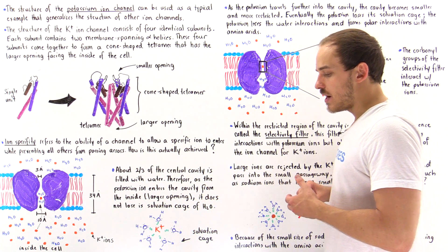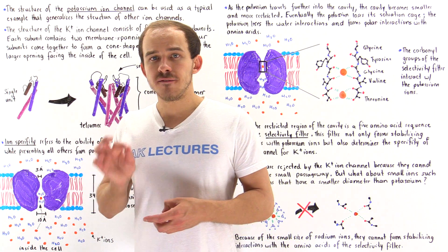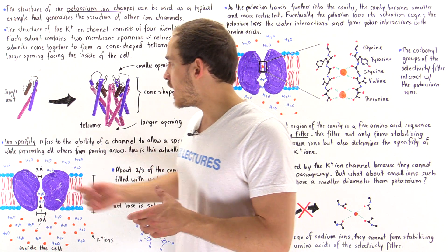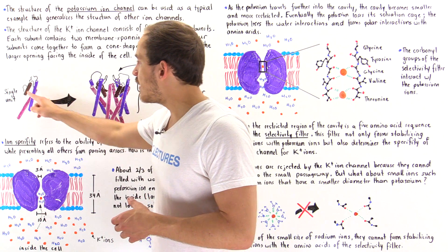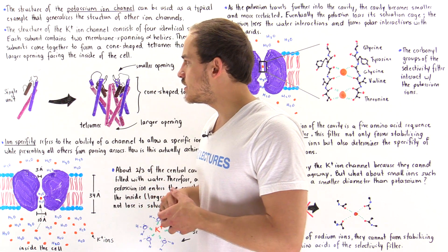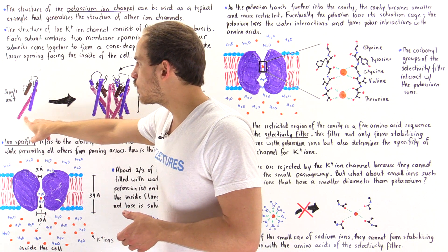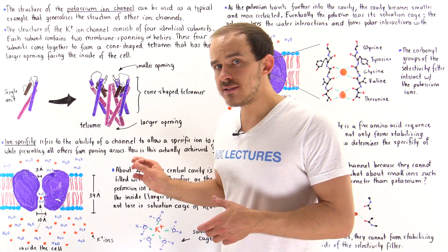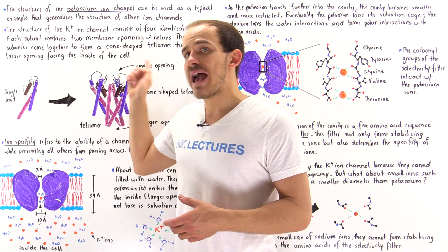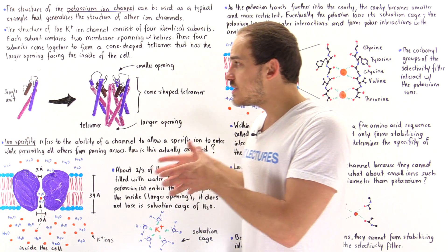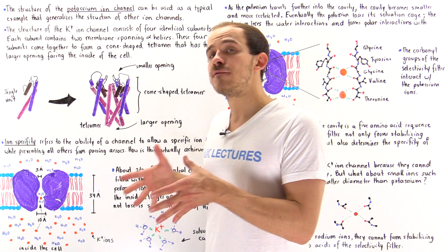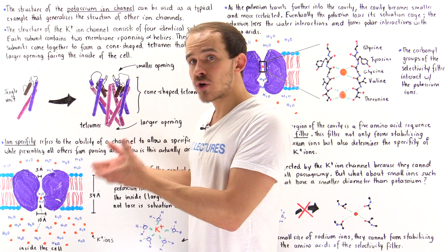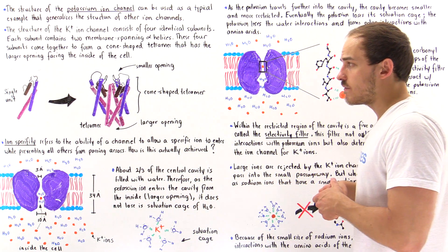The structure of potassium ion channels basically consists of four individual and identical polypeptide chains. Each subunit has three domains — three alpha helices: one shown in brown, one in dark purple, and one in light purple. The dark and light purple alpha helices are the membrane-spanning alpha helices, found within the hydrophobic core of the membrane, anchoring the entire protein structure into that hydrophobic core.